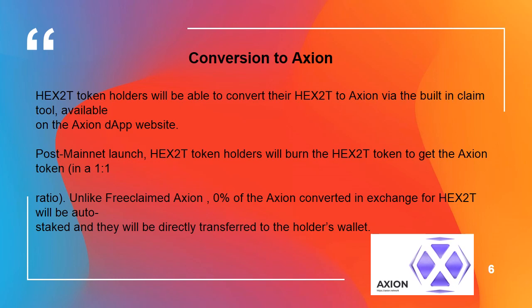Conversion to Axion: HEX2t token holders will be able to convert their HEX2t to Axion via the built-in claim tool available on the Axion DApp website post mainnet launch. HEX2t token holders will burn the HEX2t token to get the Axion token in a 1-to-1 ratio. Unlike free claimed Axion, 0% of the Axion converted in exchange for HEX2t will be auto-staked, and they will be directly transferred to the holder's wallet.